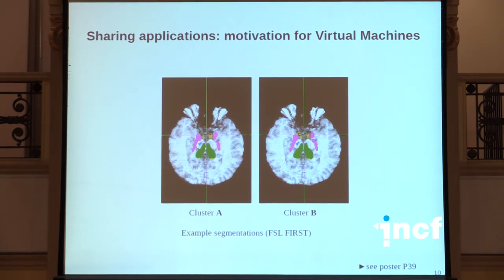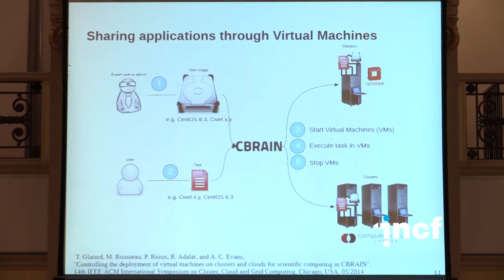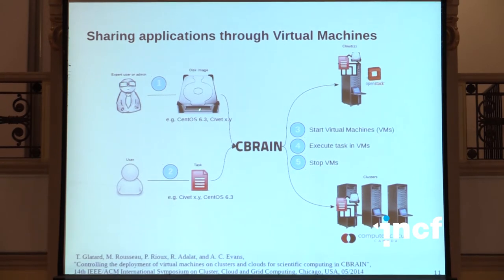When this is completely finished, we'll have a repository of virtual appliances that can be exchanged between the two platforms. The first step was to enable these platforms to use virtual machines to execute their tasks, which we've done in C-Brain. Administrators can now declare disk images in C-Brain, and users can specify a particular disk image when executing their tasks. C-Brain then takes care of deploying these virtual machines either on Compute Canada clusters or on clouds via an OpenStack interface, and stops the VMs when tasks are complete.